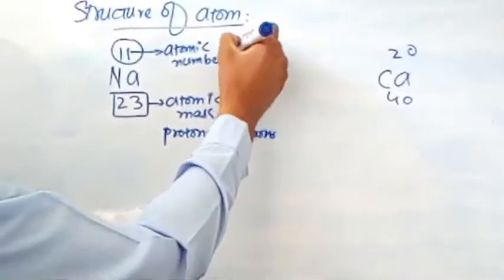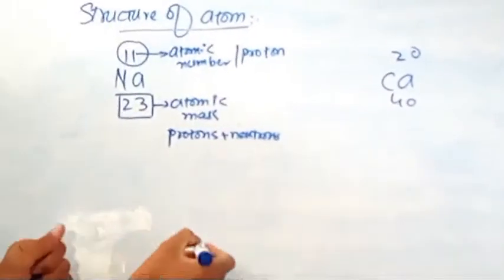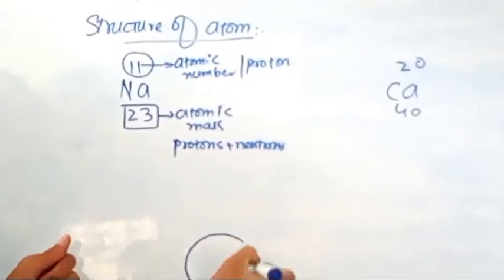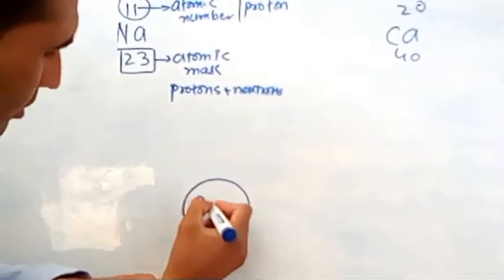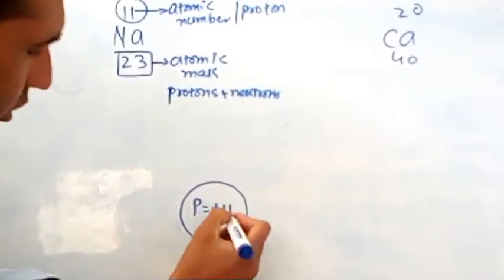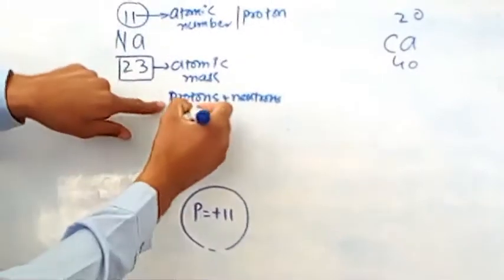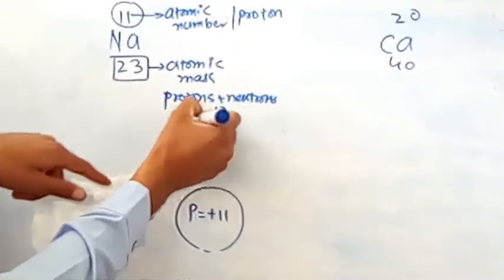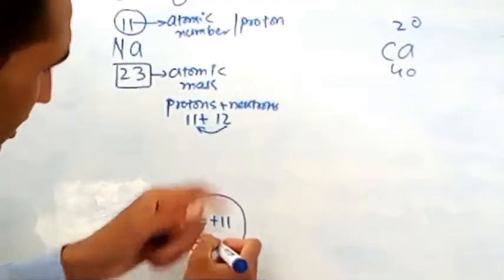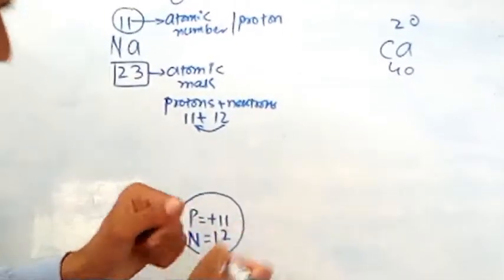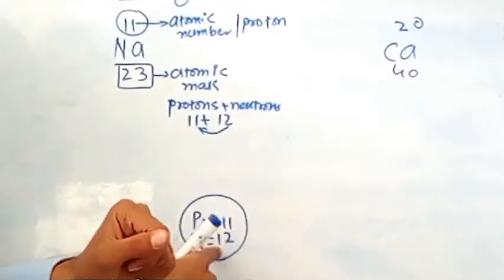So atomic number is only protons. Now we will make the nucleus for the sodium atom. Sodium has 11 protons in the nucleus. If we add 12 neutrons to 11, the atomic mass will be 23, meaning sodium has 12 neutrons. This is the distribution of protons and neutrons in the nucleus.